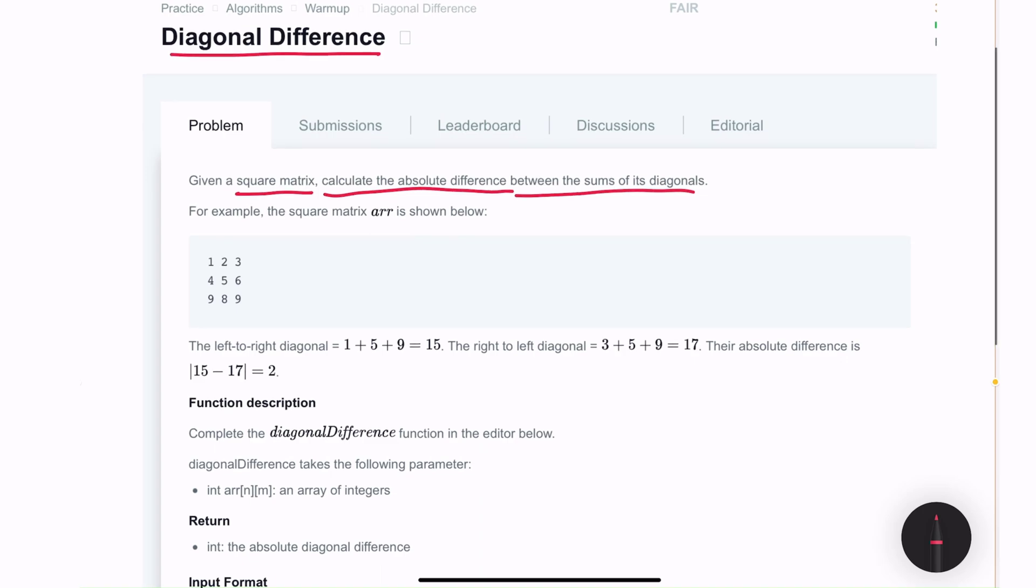For example, in this 3 by 3 matrix, the diagonals are 1, 5, and 9, and the other diagonal is 3, 5, 8. And if we add them together, the first will give us 15, the other one would give us 17, and the absolute difference between the two totals is 2.